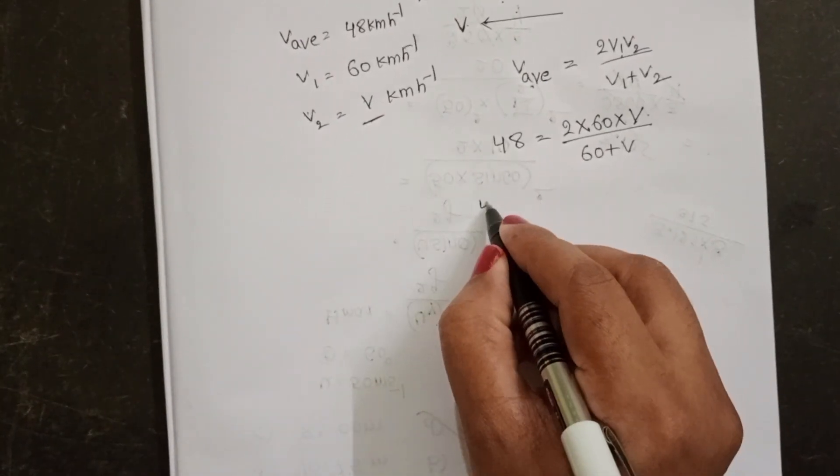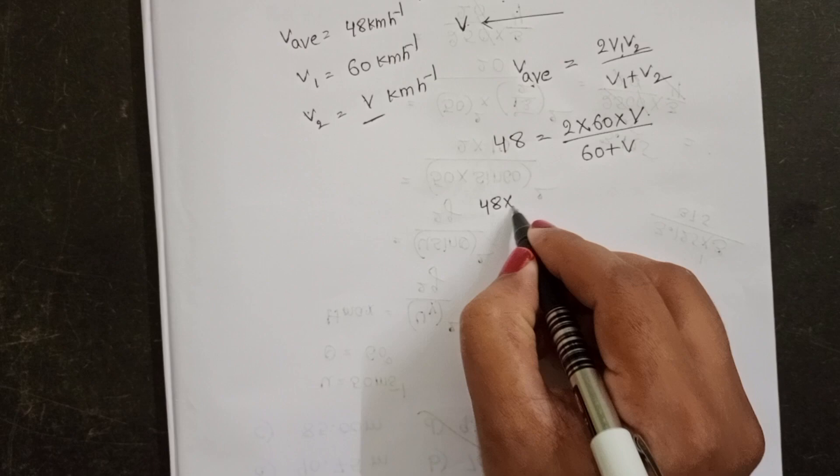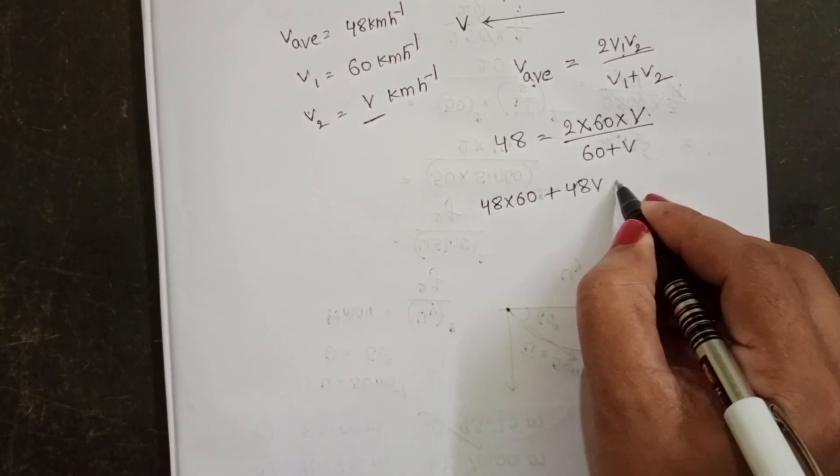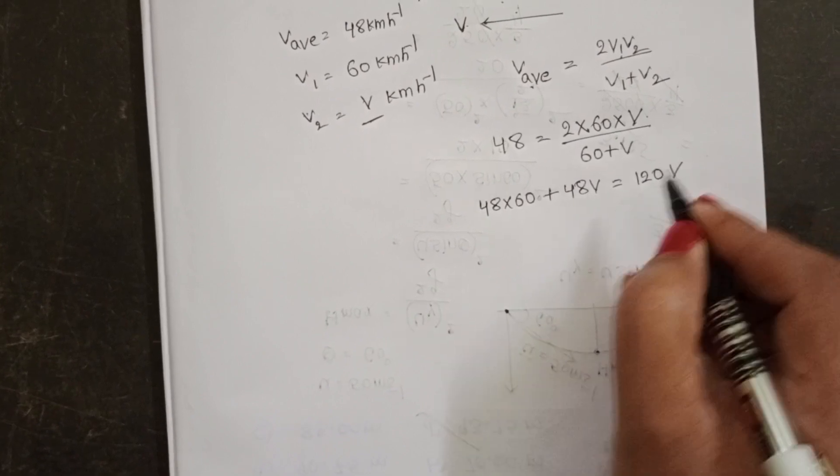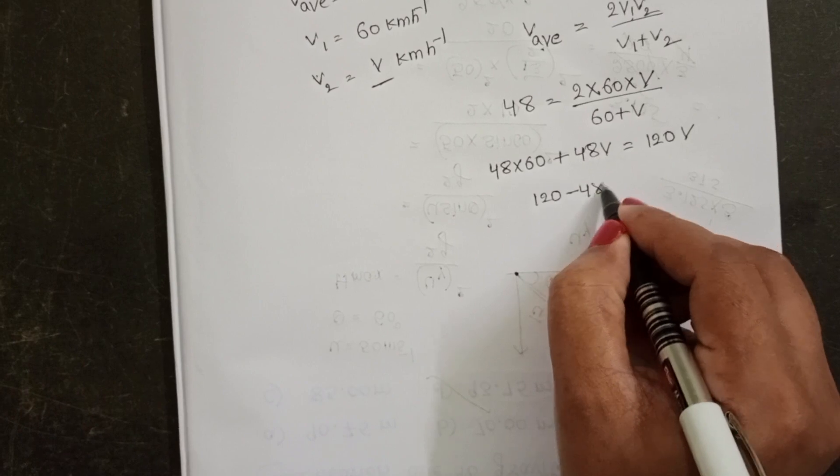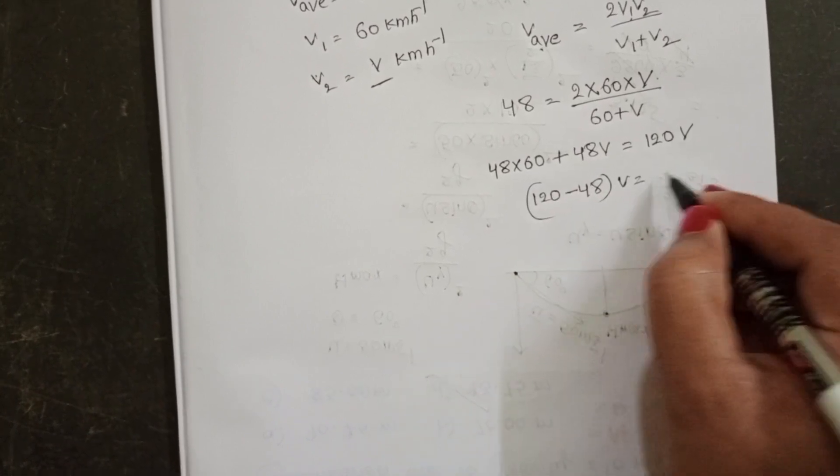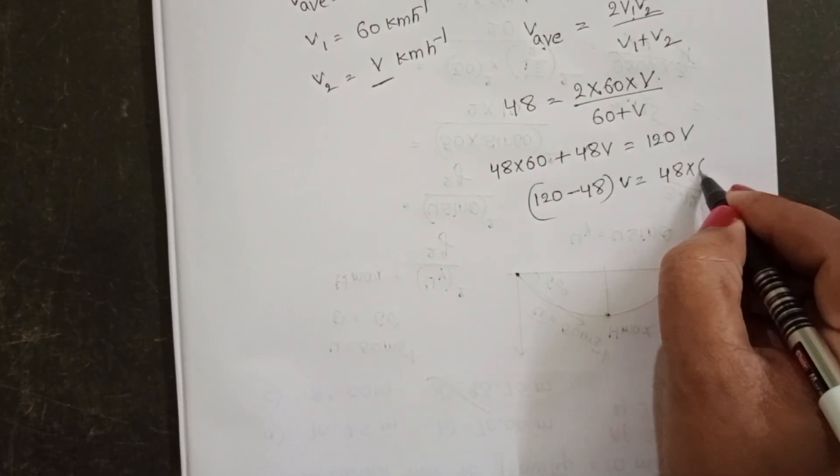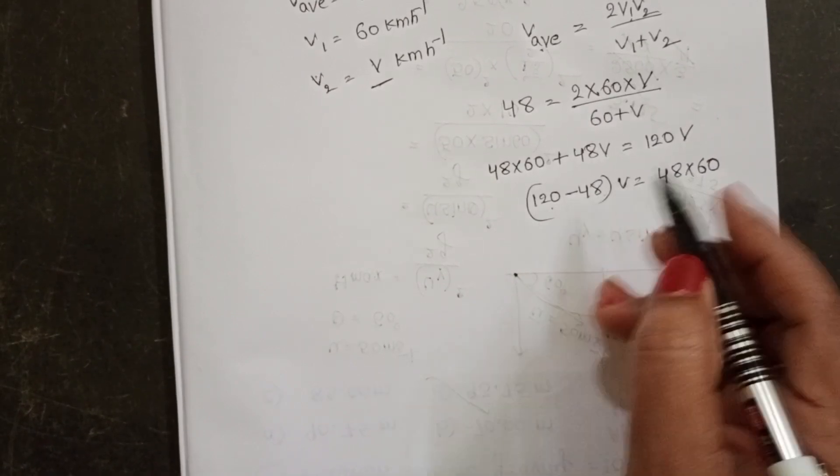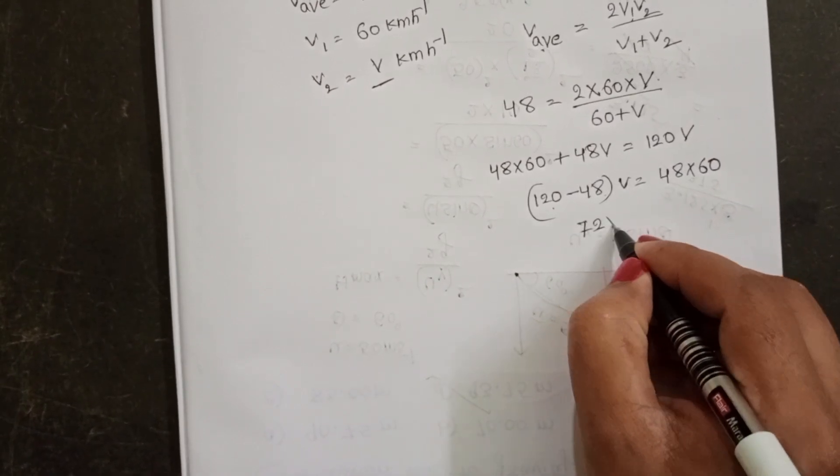Take cross multiplication. 48 times 60 plus 48V equals 120V. 120 minus 48V equals 48 times 60. 120 minus 48 equals 72V.